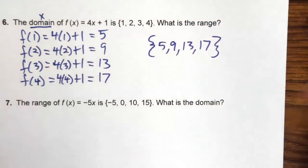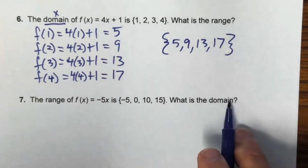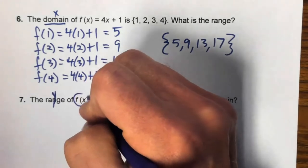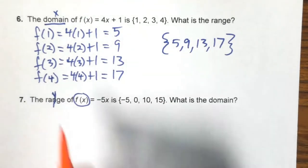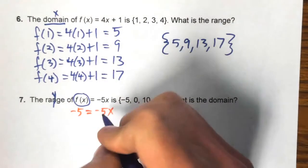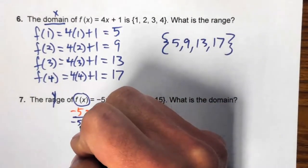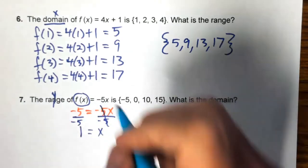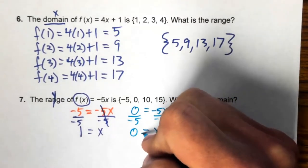Number seven: the range of f(x) = -5x is {-5, 0, 10, 15}. We need to find the domain. Since f(x) and y are interchangeable, substitute each range value for f(x) and solve for x. For -5 = -5x, divide both sides by -5 to get x = 1. For 0 = -5x, x = 0.